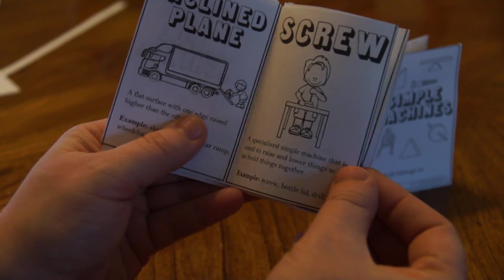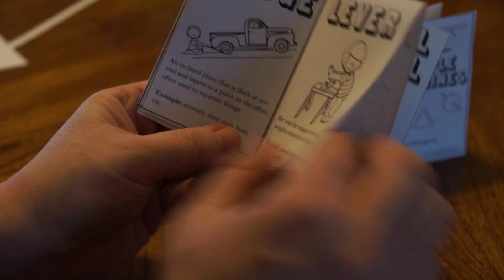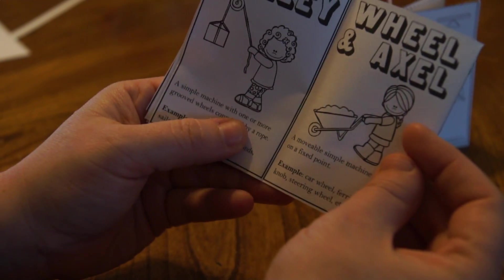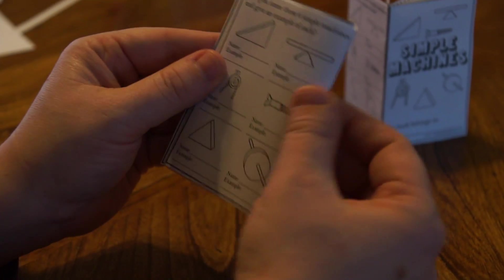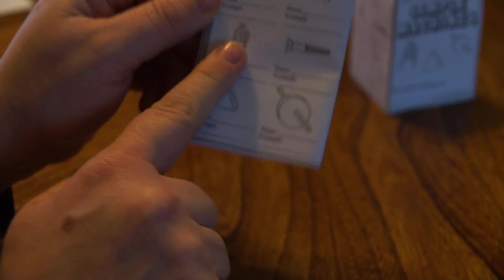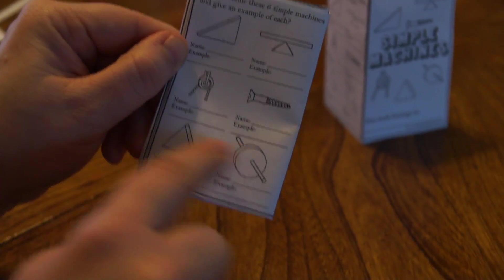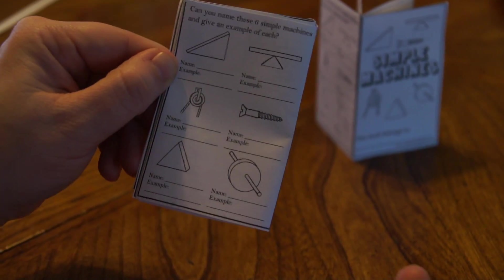So it goes through inclined planes, screws, wedges, levers, pulleys, wheels and axles. Then at the end, there's a little section for your kids to complete to name which simple machine these pictures are and to give an example.